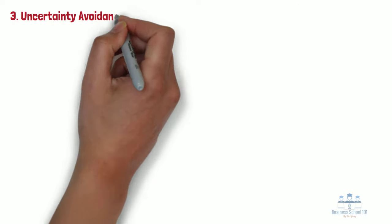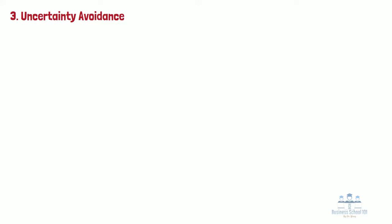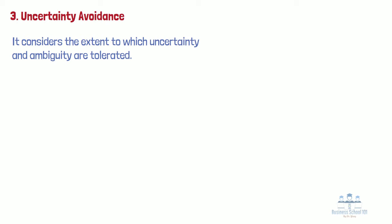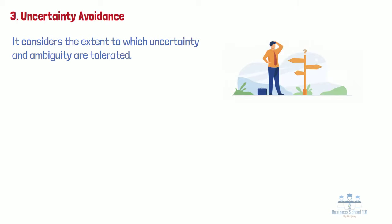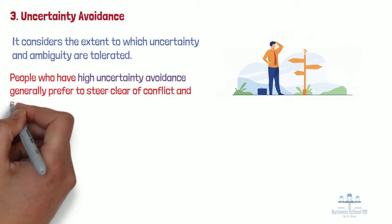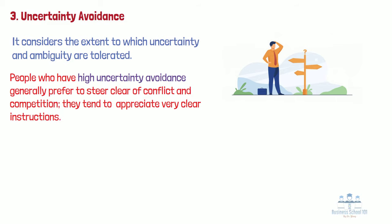Number 3: Uncertainty Avoidance Index. The Uncertainty Avoidance Index considers the extent to which uncertainty and ambiguity are tolerated, and how unknown situations and unexpected events are dealt with. People who have high uncertainty avoidance generally prefer to steer clear of conflict and competition. They tend to appreciate very clear instructions. In the workplace, sharply defined rules and rituals are used to complete tasks. Stability and what is known are preferred to instability and the unknown. Companies in these countries may show a preference for low-risk decisions, and employees are less willing to exhibit aggressiveness. Japan and France are often considered clear examples of such societies.